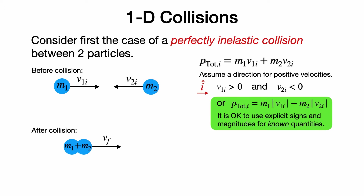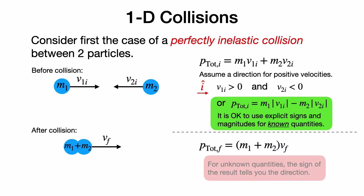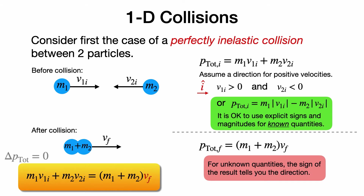After the collision, the two particles have stuck together with total mass m1 plus m2, moving with some final velocity. We do not know the direction of that final velocity, so we are careful to use the unknown velocity without assuming its sign, allowing the sign of the answer to determine the direction of the final motion. Using conservation of momentum, the initial total momentum equals the final total momentum, giving us an equation to solve for the final velocity. If the momentum of mass 2 is larger than that of mass 1, we would get a negative value for V_f, indicating the particles are moving to the left after the collision.